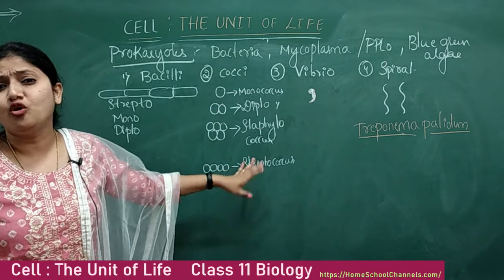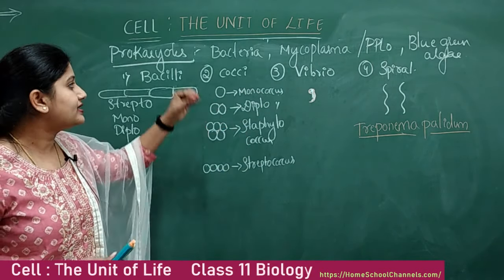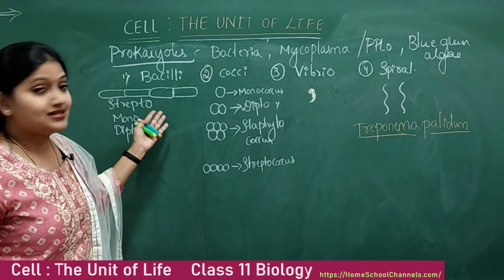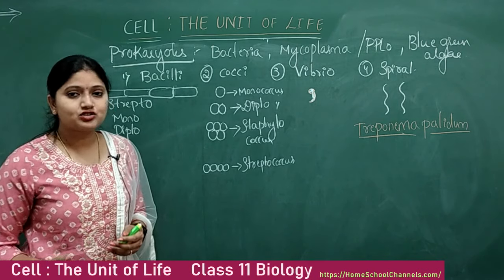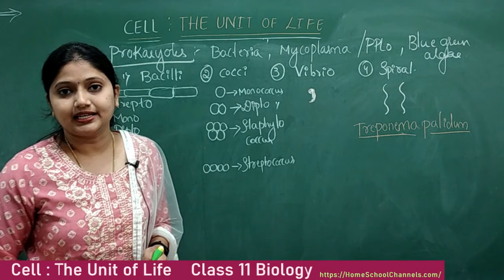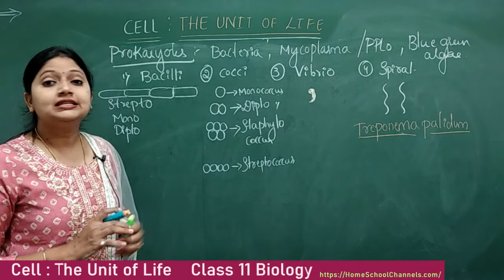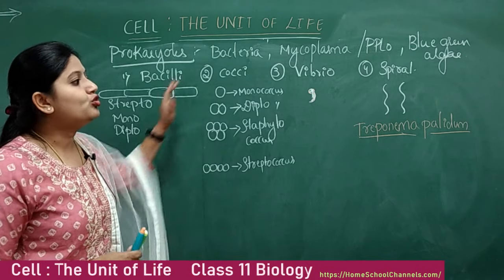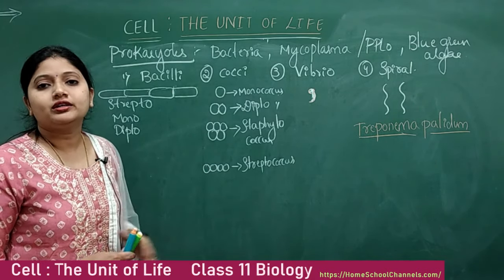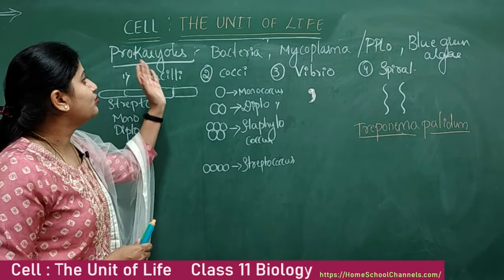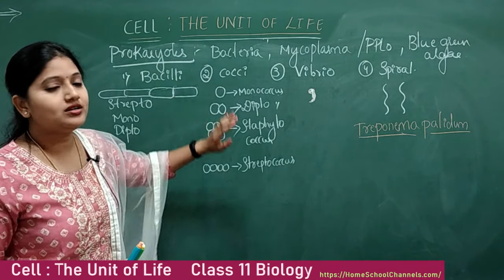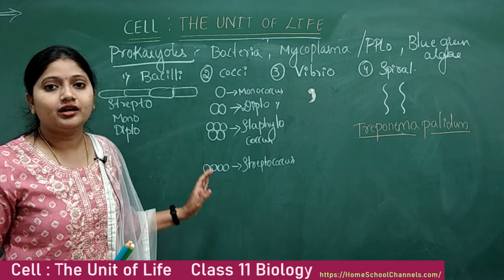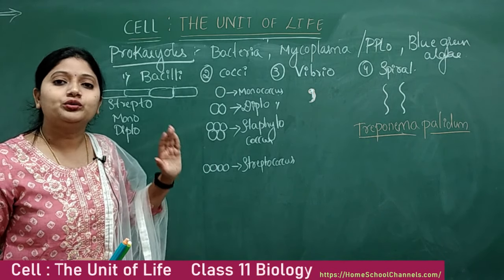Vibrio cholerae is the example for vibrio; Treponema pallidum for spiral; monococcus, diplococcus, staphylococcus, streptococcus are examples of cocci. For bacilli, the best example is Bacillus thuringiensis and the organism which causes anthrax. These are the most common shapes of bacteria. Now we will move on to the general structure of bacteria, since bacteria constitute the major part of prokaryotes. We will draw the structure and then go into detailed study in the next class.